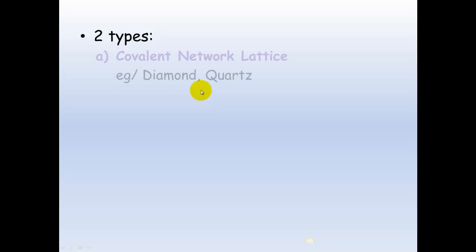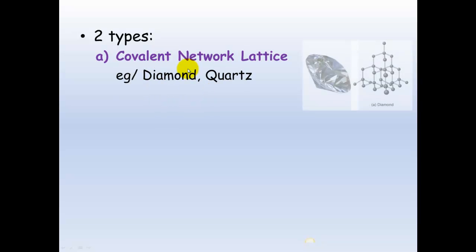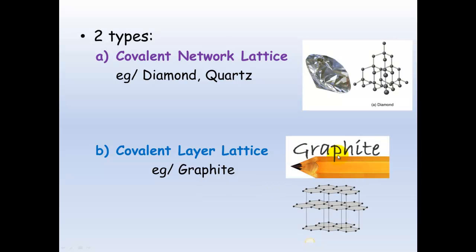There's two types of lattice that can form. There's a covalent network lattice, an example of this is diamond or also quartz. Or there's a covalent layer lattice, an example of this is graphite that you'll know in your graphite pencils. You often refer to these as lead pencils. They're not. They're now made with graphite. Lead is poisonous, so they no longer make them with lead.